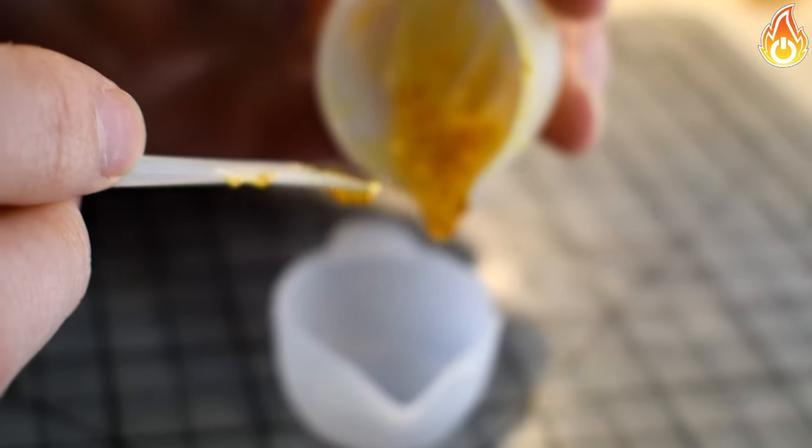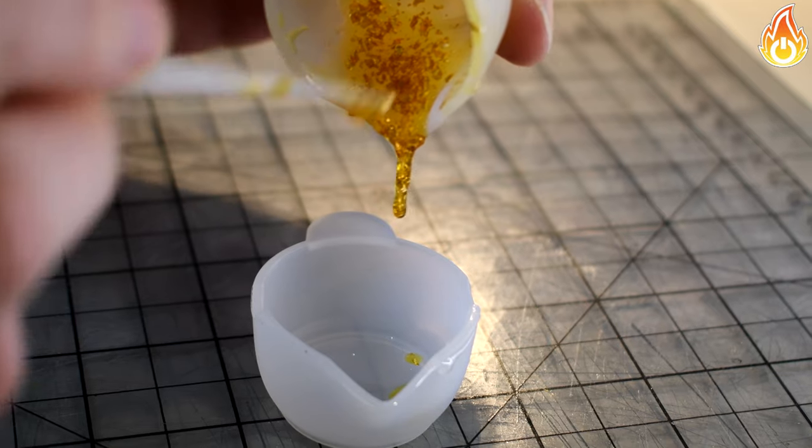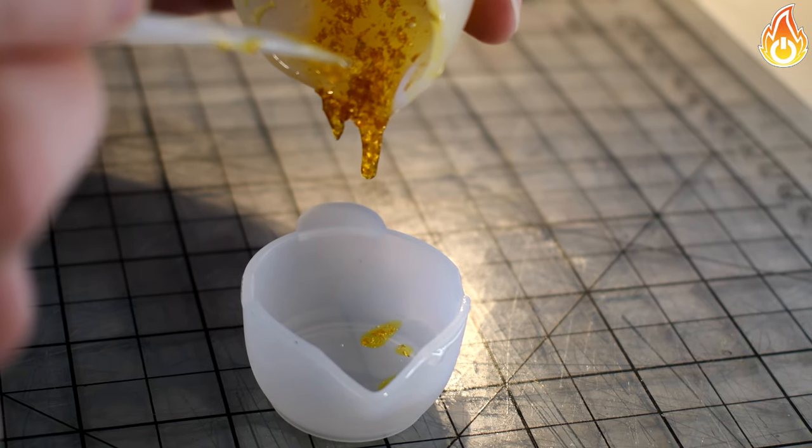After incorporating the gold leaf into our mixture very well, we added it to the clear resin and slightly mixed it for the gradient effect.